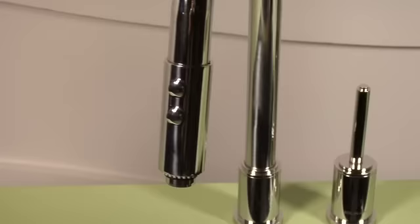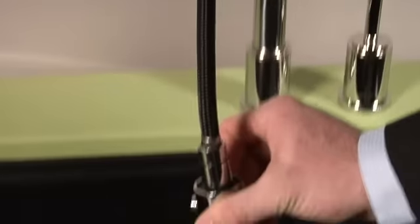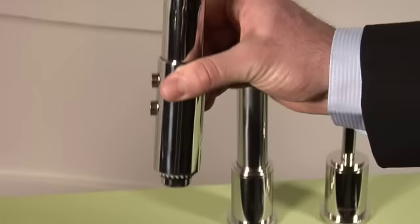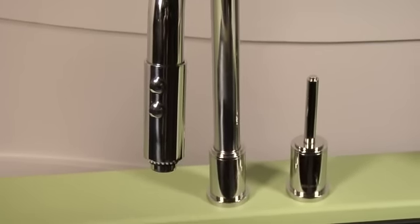Let's take a closer look at the pull-down spray. It has a twist and pull feature as well as a twist and lock feature. That allows you to safely secure the spray in the spout.